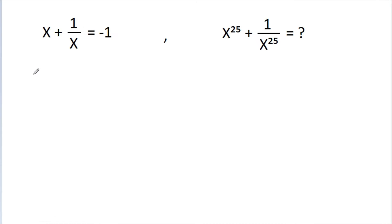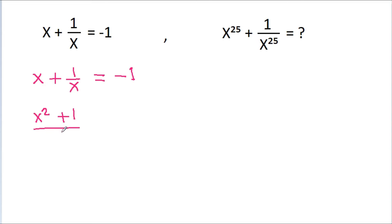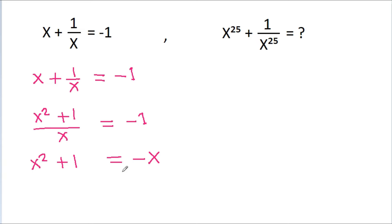We are given that x plus 1 by x is equal to minus 1. Multiplying both sides by x, we get x squared plus 1 is equal to minus x, which gives us x squared plus x plus 1 is equal to 0.